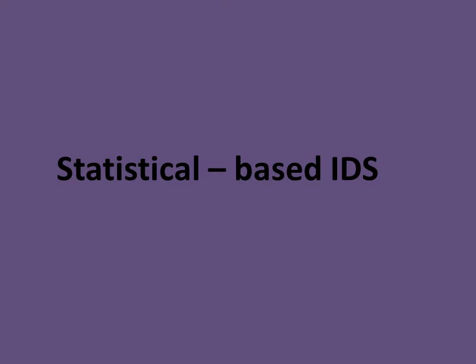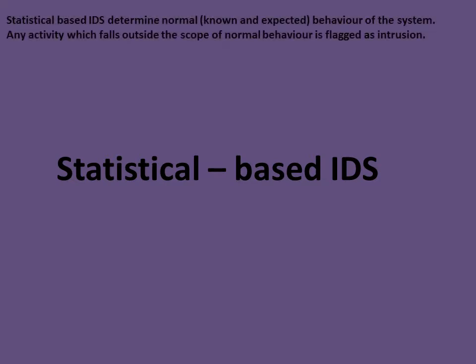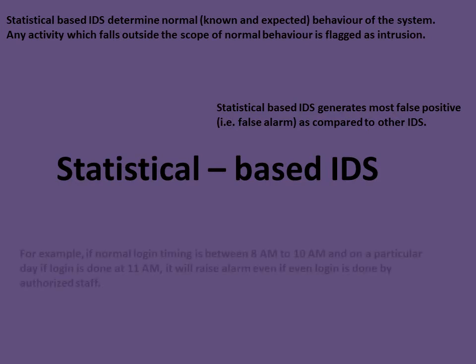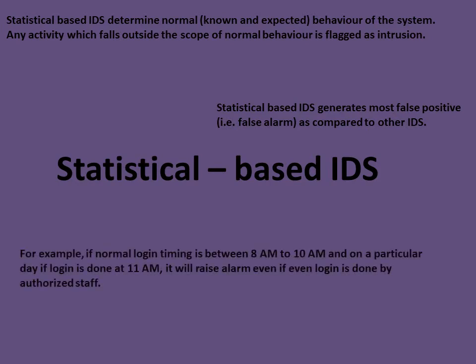Statistical-based IDS notes the normal activity or behavior of the system, and any activity which falls outside the scope of normal behavior is flagged as intrusion. It generates the most false positives compared to other IDS systems. For example, if normal login timing is between 8 AM to 10 AM, a login at 11 AM will raise an alarm even if done by authorized staff.